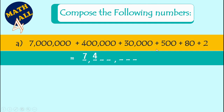The four hundred thousand will be just four in the hundred thousands place. The thirty thousand will be just three in the ten thousands place. Any thousands to put in the thousands place? No thousands, so I will put just zero. Five in the hundreds place, eight in the tens place, and two in the ones place. Now let's read this number: seven million, four hundred thirty thousand, five hundred eighty-two.